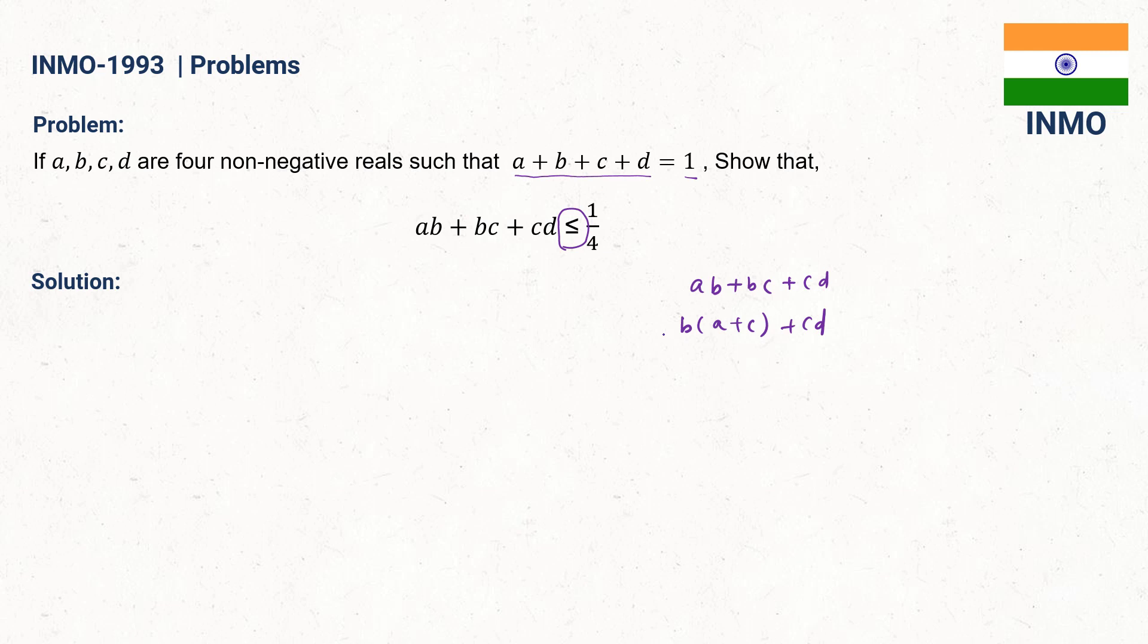This means we can use ABCD to make an expression similar to this. So what we will do? We will write an expression like A plus C into B plus D, which equals AB plus BC plus CD plus AD.